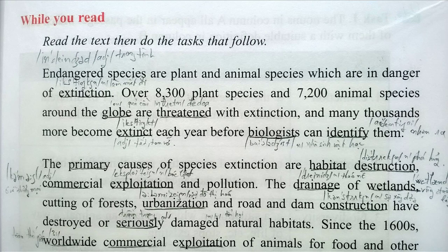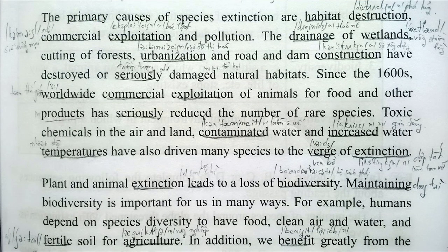The primary causes of species extinction are habitat destruction, commercial exploitation, and pollution. The drainage of wetlands, cutting of forests, urbanization, and road and dam construction have destroyed or seriously damaged natural habitats since the 1600s. Worldwide, commercial exploitation of animals for food and other products has seriously reduced the number of rare species.